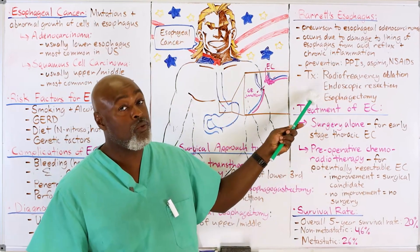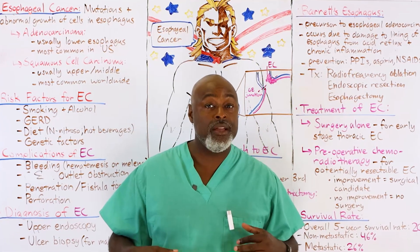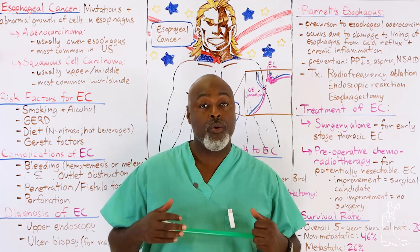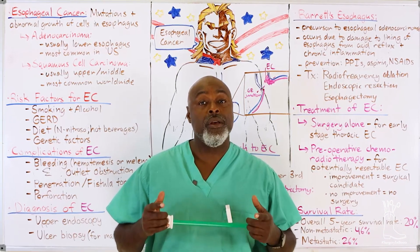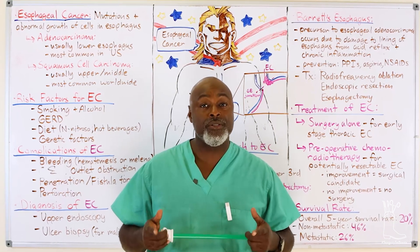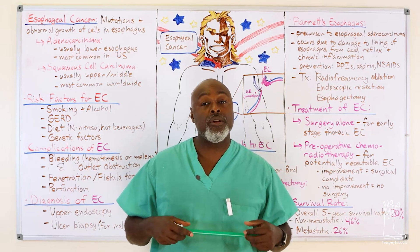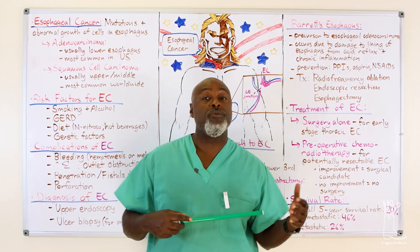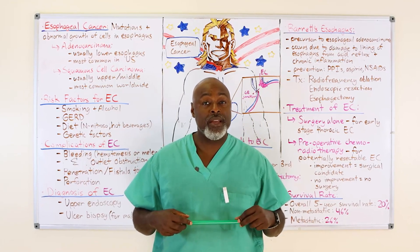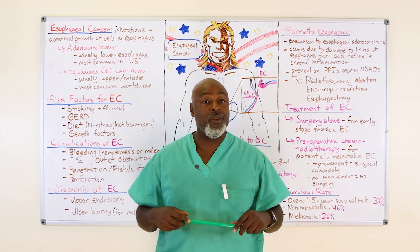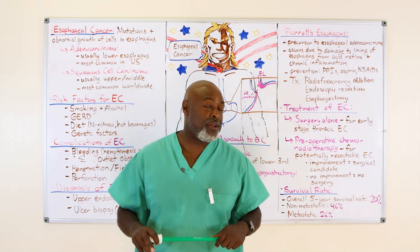If ablation doesn't work and we can't ablate these cells, the other option is an esophagectomy. You can do an esophagectomy for recurrent Barrett's esophagus because we know it is a precursor to adenocarcinoma and it will change. A lot of patients who undergo multiple procedures and end up with refractory Barrett's — when we do resections, they actually will have small pockets of esophageal cancer in their specimen. So yes, we will do an esophagectomy for benign disease in this situation.